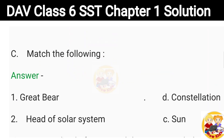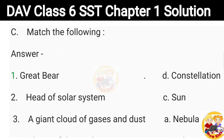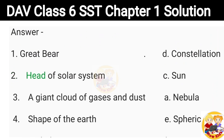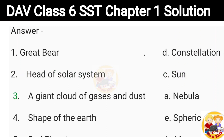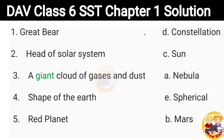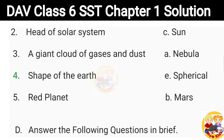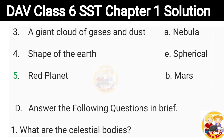Match the following. 1. Great Bear — Constellation. 2. Head of solar system — Sun. 3. A giant cloud of gases and dust — Nebula. 4. Shape of the Earth — Spherical. 5. Red Planet — Mars.